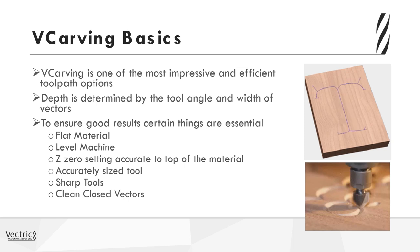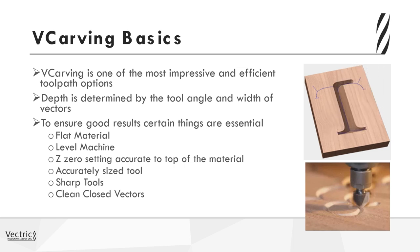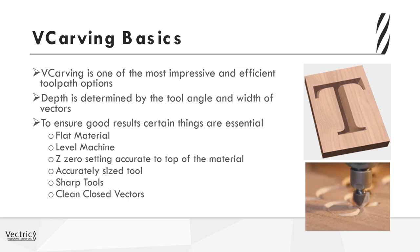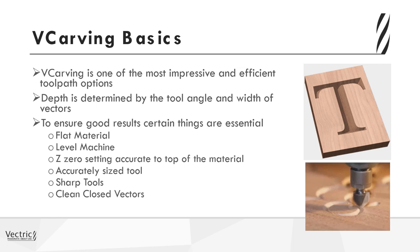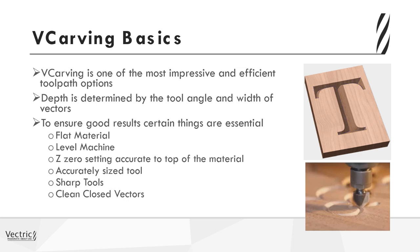We also need to have accurately sized tools. Even if our tool states that it is a 90 degree tool it's best to measure that, as even one degree out will alter the look of the part in preview or on the machine. Another aspect is to ensure that our tools have a very sharp point and not a small flat end, as this will take away from the overall effect, and we want to make sure that there are no dents on the tool. Lastly, we want to use clean closed vectors to v-carve, ensuring a nice smooth toolpath result. We also need to ensure that these vectors are not overlapping, as this will make it unclear to the software which areas we are asking it to v-carve. If you do have a design that requires overlapping, you can create separate v-carving toolpaths which run in the order you require to achieve the effect you're after.